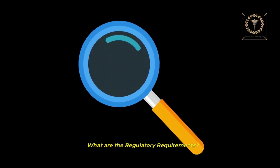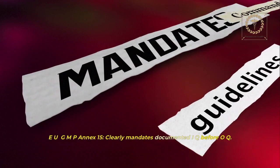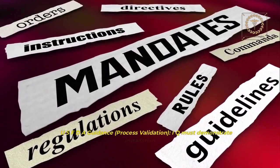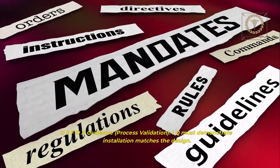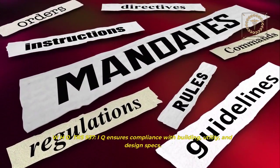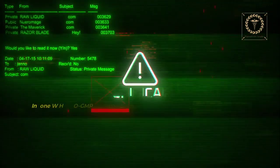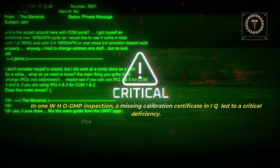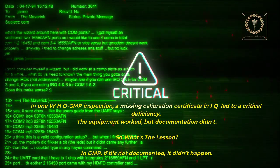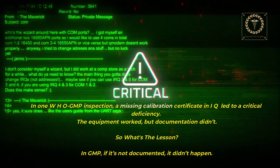What are the regulatory requirements? EU GMP Annex 15 clearly mandates documented IQ before OQ. US FDA guidance on process validation states IQ must demonstrate that installation matches the design. WHO TRS 937 requires IQ to ensure compliance with building, utility, and design specifications. In one WHO GMP inspection, a missing calibration certificate in IQ led to a critical deficiency. The equipment worked, but documentation didn't. In GMP, if it's not documented, it didn't happen.